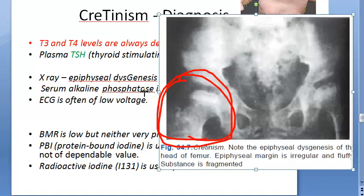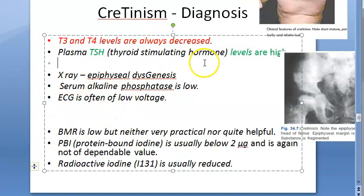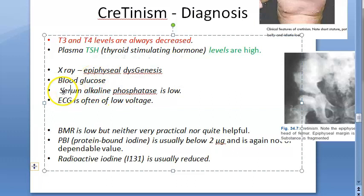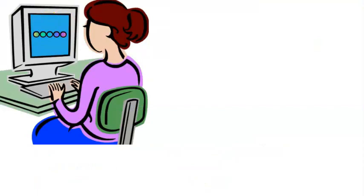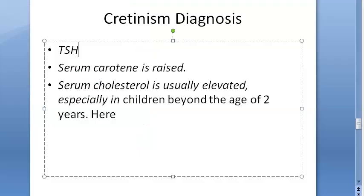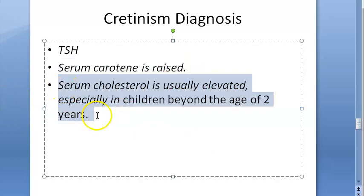Other diagnostic findings include: blood glucose levels should be checked (fasting and postprandial); serum alkaline phosphatase is low; ECG shows low voltage; BMR is low; protein-bound iodine (PBI) is below 2 micrograms though not fully dependable; and radioactive iodine uptake is usually reduced. On the raised side, TSH is elevated, serum carotene is raised, and serum cholesterol is usually elevated.